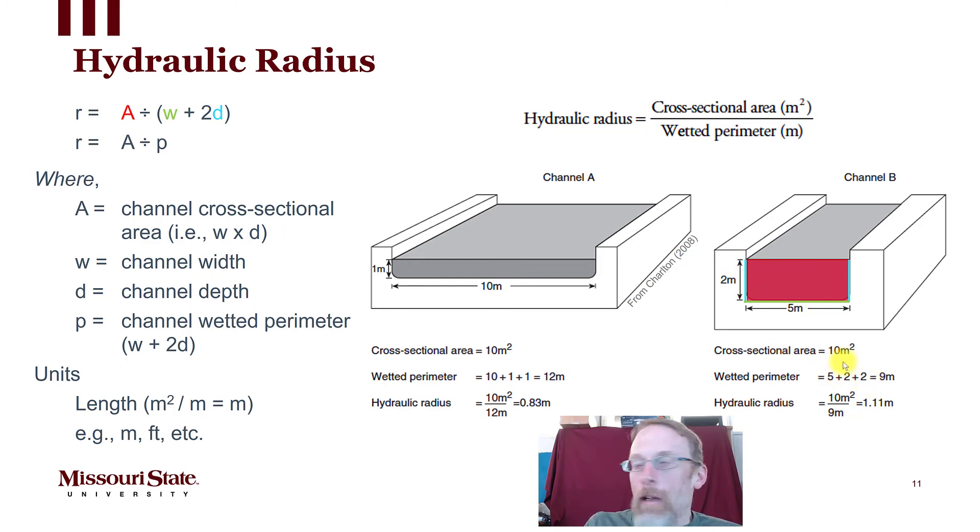So if we look at the math down here below Channel B on the right, we see that our wetted perimeter is 9. Hydraulic radius is equal to area divided by wetted perimeter, so 10 square meters divided by 9 meters, which equals 1.11 meters is our hydraulic radius.